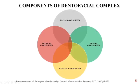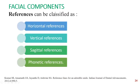Coming on to the components of the dental-facial complex, they can be broadly divided into facial components, dental components, gingival components, and physical components. Coming on to the facial components, there are four references: horizontal references, vertical references, sagittal references, and phonetic references.